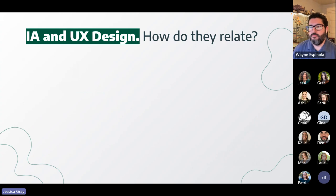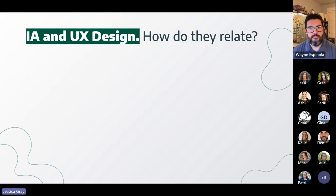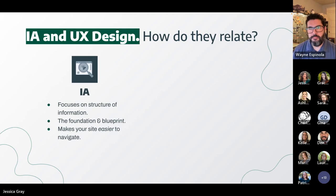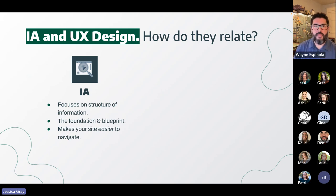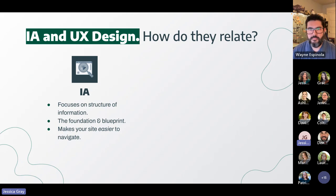Information architecture and user experience design — you may have heard these two terms used interchangeably. While they are related, they have completely different end goals in mind. Think of information architecture as a foundation and blueprint of a product, system, or service. It provides a clear path for users that makes it easier for them to navigate through. It is a key aspect of UX that prioritizes organizing information and proper structuring.